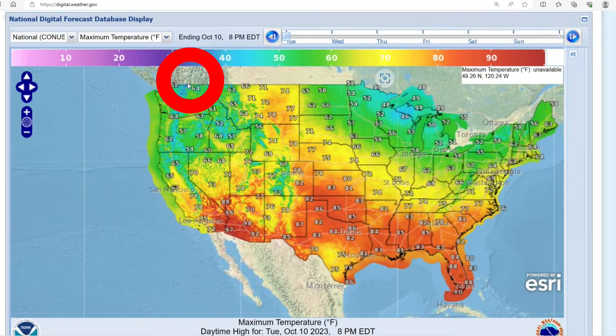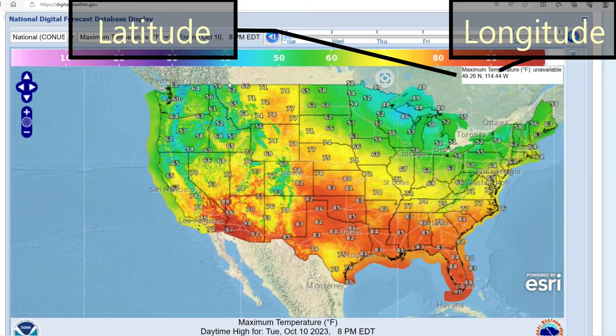If we move the mouse's pointer close to a line of latitude, we can see the first value, which is the value of latitude, stays about the same. But the second value, which is the value of the longitude, changes as we move the pointer.